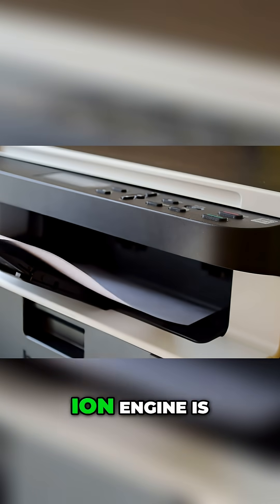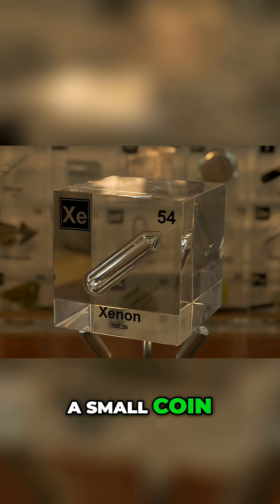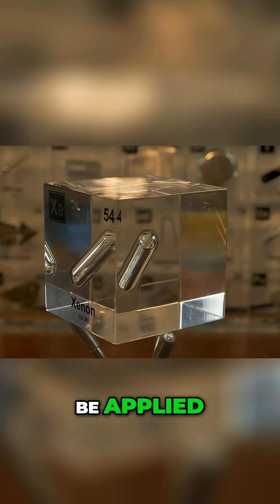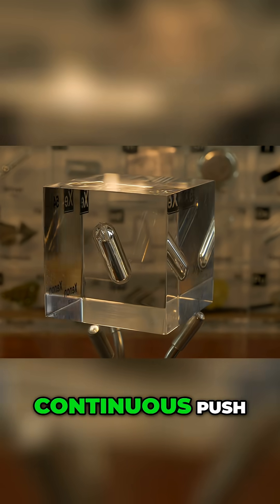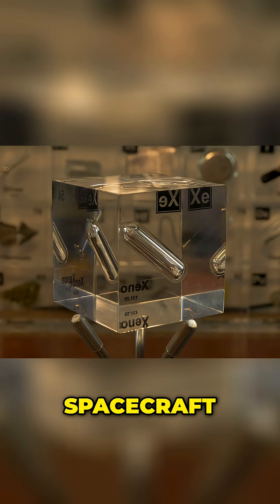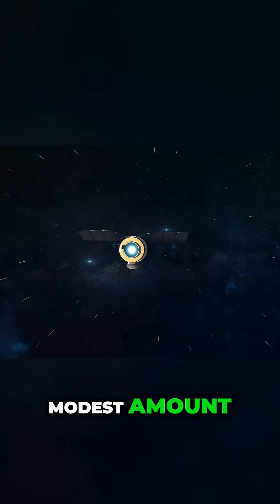The thrust from an ion engine is gentle, comparable to the weight of a sheet of paper or a small coin in your hand, but it can be applied continuously for months or years. Over time, that continuous push lets the spacecraft reach very high speeds using only a modest amount of propellant.